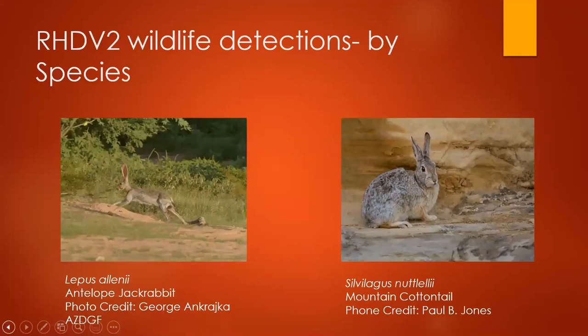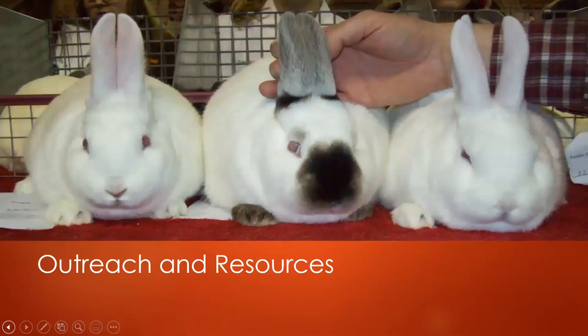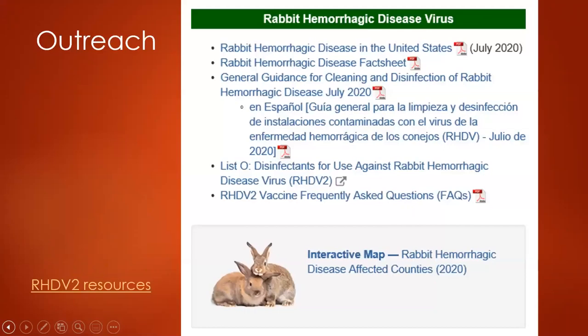Regarding wildlife activity, RHDV-2 wildlife detections have been known to affect the black-tailed jackrabbit, the desert cottontail (Sylvilagus audubonii), the antelope jackrabbit (Lepus alleni), and the mountain cottontail (Sylvilagus nuttallii).